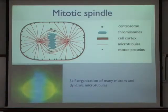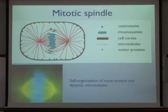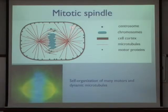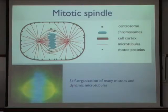I want to discuss in particular the role of so-called cortical force generators. These are very likely dynein motors, probably in aggregates of some sort, that link microtubules to the cortex and regulate the behavior of the mitotic spindle during cell division.